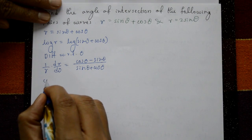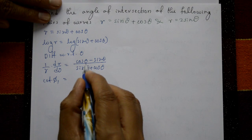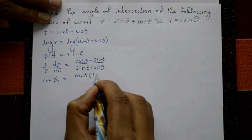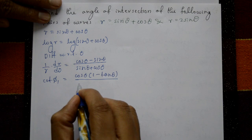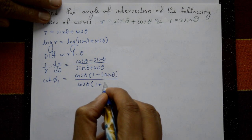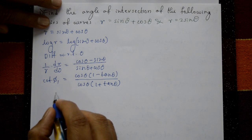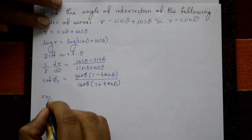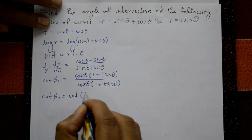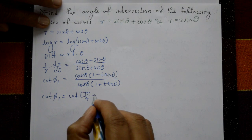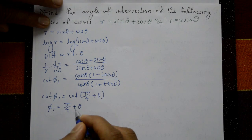Taking cosθ common from numerator and denominator, this simplifies using tan: cotφ₁ = (1 − tanθ)/(1 + tanθ). Interchanging, cos cancels and cotφ₁ = cot(π/4 + θ), so φ₁ = π/4 + θ.